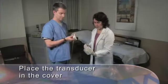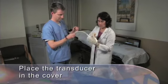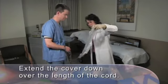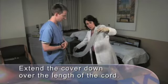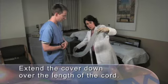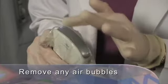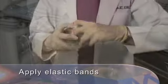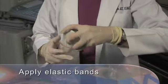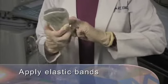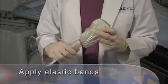The non-sterile person places the transducer into the cover. The sterile person then extends the cover down over the length of the cord, ensuring proper sterile technique. Check carefully and remove any air bubbles that are between the transducer face and the cover. While remaining in the sterile field, apply enclosed sterile elastic bands to secure the cover in place.